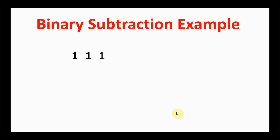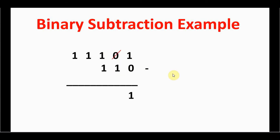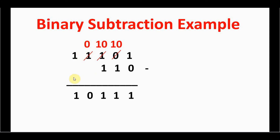For the subtraction example, the first number has five digits and the second has three. Starting from the LSB: one minus zero equals one. For zero minus one, borrow from the next higher digit — it becomes one-zero minus one, which is one. Where we borrowed, it becomes zero; borrow again from the next digit, giving one-zero minus one equals one. Bring down the remaining digits — zero and one — as they are. The final answer is one-zero-one-one-one.